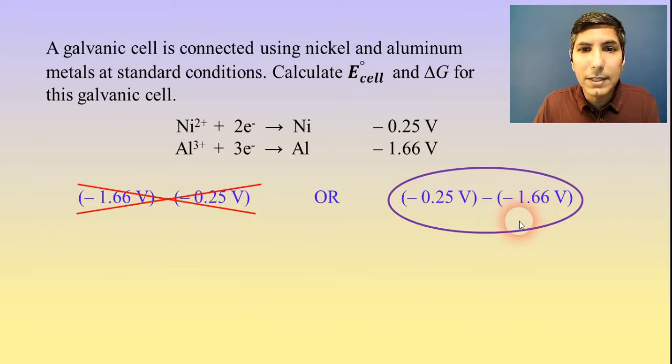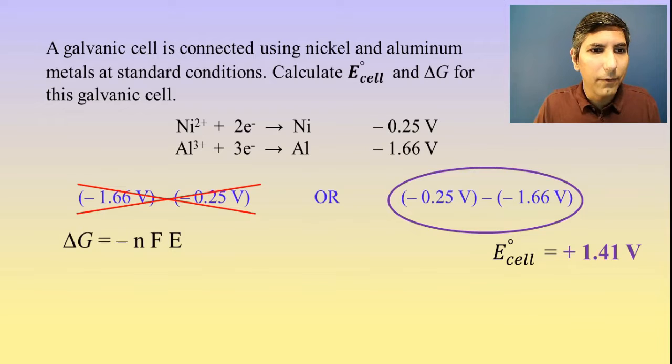The E cell is just whatever you compute this to be, so that's positive 1.41 volts. Now we're going to calculate delta G for this process using that equation. We're solving for delta G.